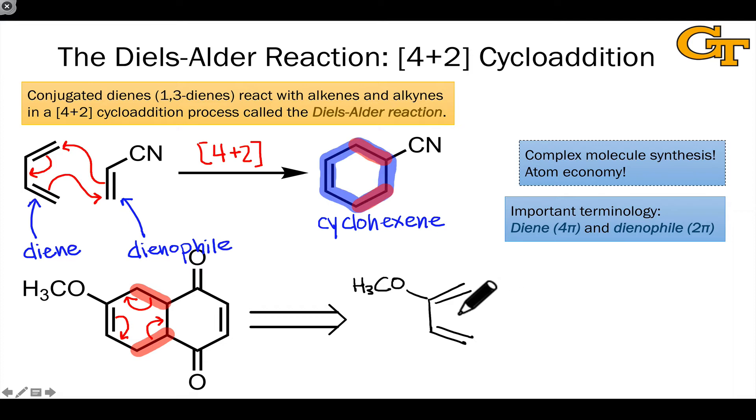So here's the diene and notice that I've got two new double bonds, one from cleavage in the reverse direction of this sigma bond and the other one from a shift of the double bond in the cyclohexene down like so.